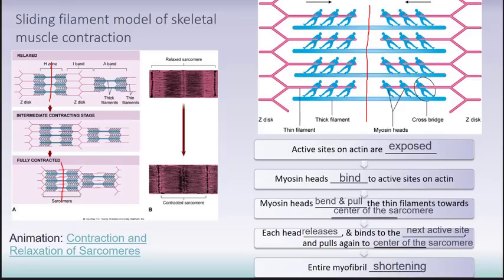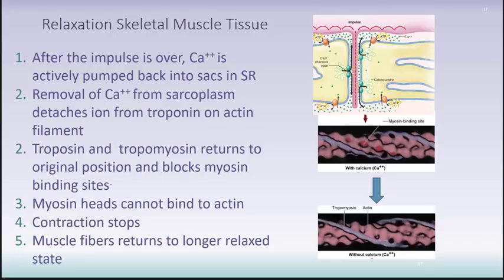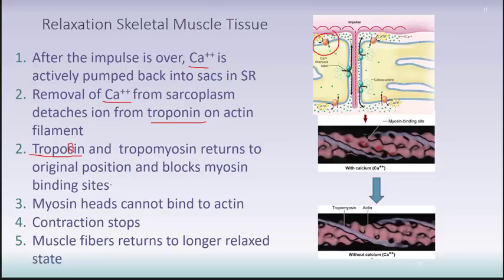To summarize: active sites on actin are exposed when calcium is released from the sarcoplasmic reticulum and binds to troponin, causing movement of tropomyosin. Myosin heads bind to these sites and bend to pull the thin filaments toward the center of the sarcomere. Each head then releases and binds to the next available site, continuing to shorten the muscle. For relaxation, once contraction is complete, calcium is actively pumped back into the sarcoplasmic reticulum via ATP. Calcium removed from troponin causes troponin and tropomyosin to return to their original positions, covering the binding sites, and the muscle returns to its relaxed state.